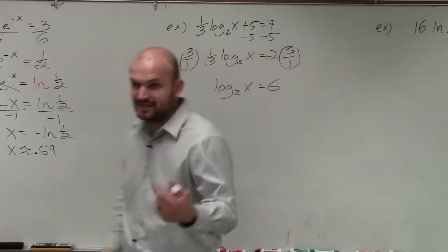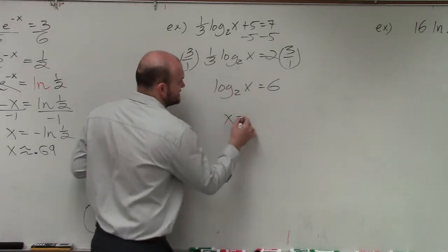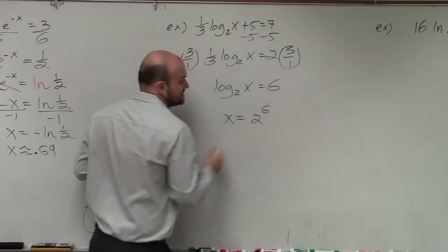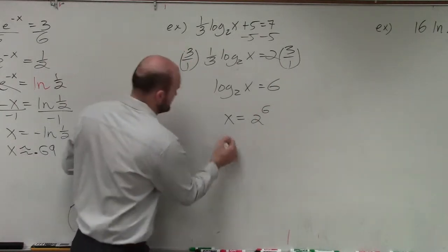Now, to go ahead and rewrite this, to solve for this, I can rewrite this in exponential form, which would be x equals 2 raised to the 6, and 2 raised to the 6 is going to equal 64.